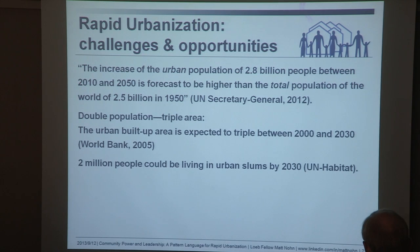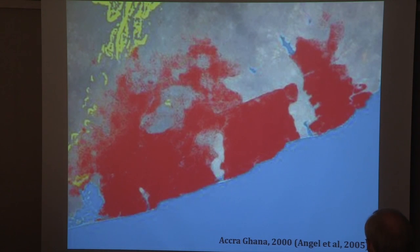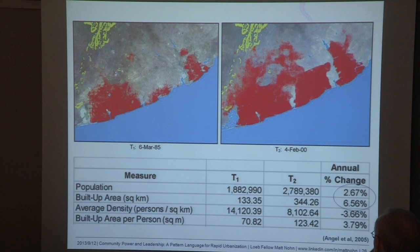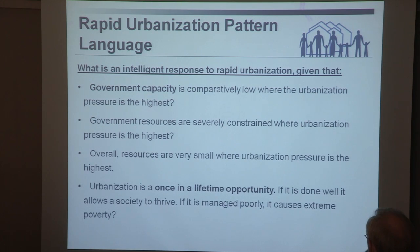In larger cities you need more commuting space; these factors combine so that if you do not plan sustainably, the UN Habitat forecast will come true and two billion people will be living in slums. Here you can see an example — Accra in Ghana in 1985 and 15 years later. The population increase was below three percent per year, but the built-up area increase was above six percent per year. So the question becomes: what is an intelligent way of dealing with rapid urbanization, especially where it is fastest — where government resources and people's capacities are the lowest?